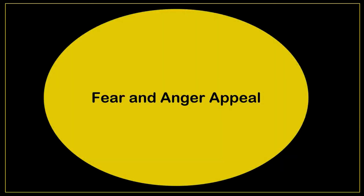Fear and anger appeal: these are extreme emotional appeals and should be applied carefully, as they can annoy the audience. There are two options available — an advertiser can either increase the fear and anger of the audience, or they can reduce the fear or anger of the audience. On screen, two print ads demonstrate fear appeal and one print ad demonstrates anger appeal.